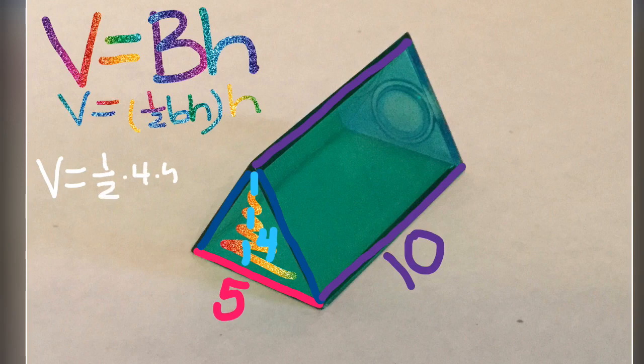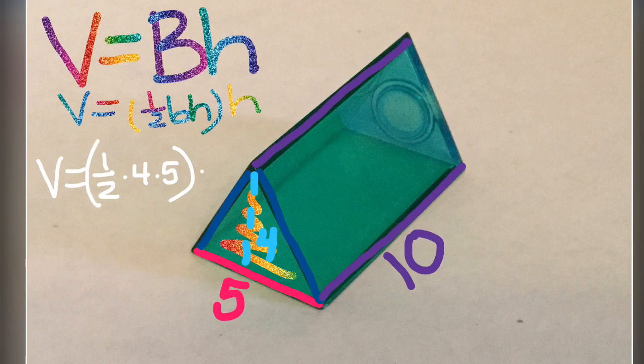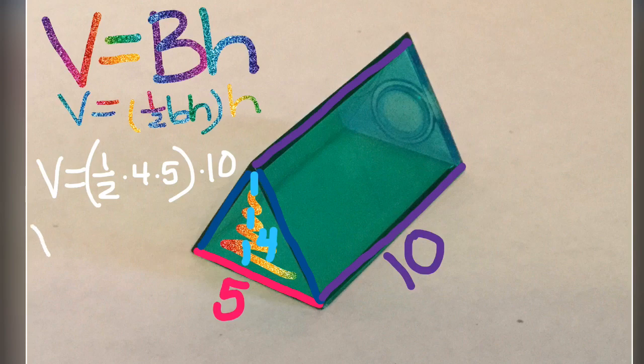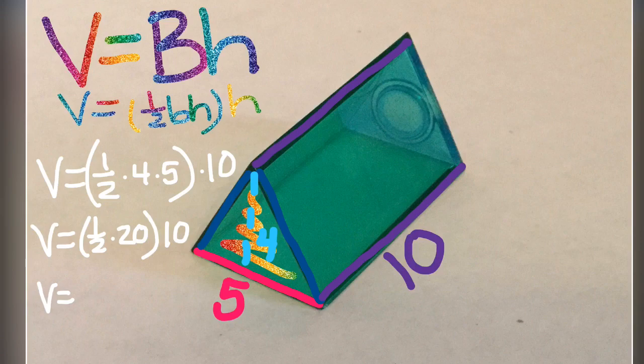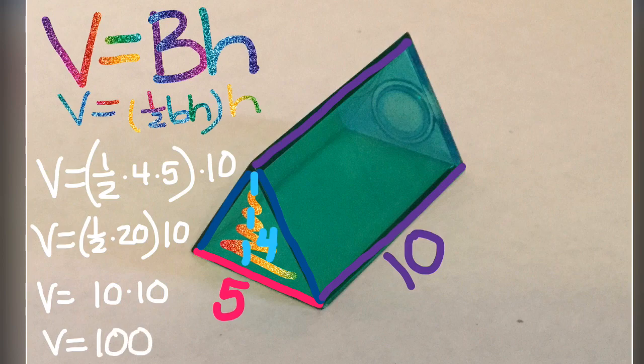First of all, the area formula is 1 half times 4 times 5, and that's all going to be multiplied by 10, which is the height of the shape. So, we're going to find half of 20. This just sounds similar to the rectangular prism that was 20. The triangle is half of that. So, we have 10 times 10, so that the volume of this triangular prism is 100 units cubed.